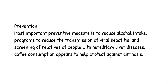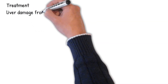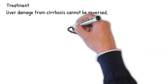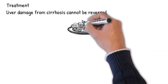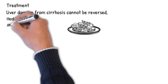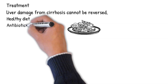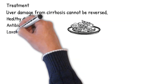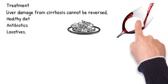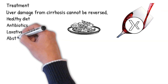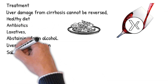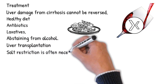Treatment: Generally, liver damage from cirrhosis cannot be reversed, but treatment can stop or delay further progression and reduce complications. A healthy diet is encouraged. Antibiotics are prescribed for infections. Laxatives such as lactulose decrease the risk of constipation. Alcoholic cirrhosis is treated by abstaining from alcohol. Treatment for hepatitis-related cirrhosis involves medications such as interferon for viral hepatitis and corticosteroids for autoimmune hepatitis. If complications cannot be controlled or when the liver ceases functioning, liver transplantation is necessary.